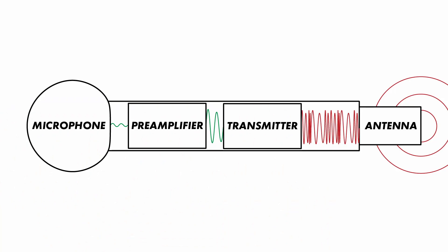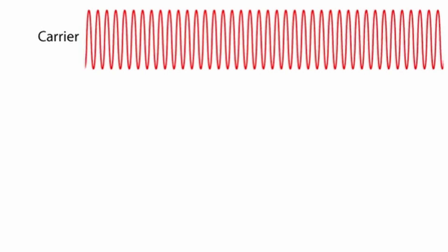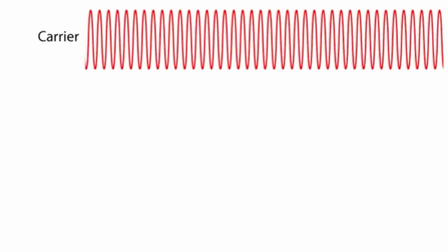Going back to the old days of analog wireless microphone systems, we would have a frequency modulation device inside our wireless microphone. What that is doing is literally taking the vocal audio and modulating the transmitter frequency. With every wireless device, we have to have a frequency that we tune into — that's the frequency we're going to transmit at.